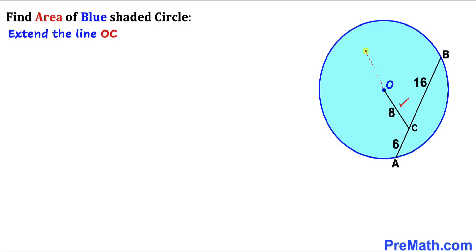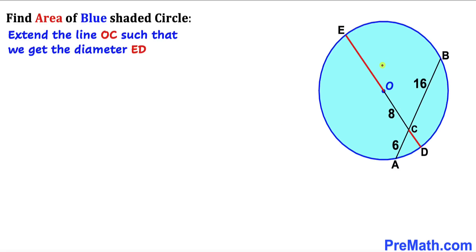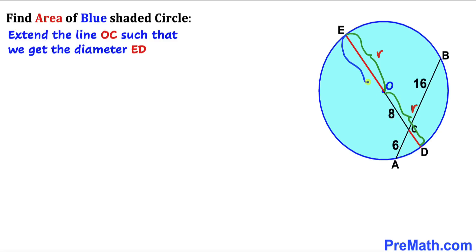I'm going to extend OC in both directions. As you can see in the next diagram, we get the whole diameter ED. We can observe that EO is the radius r, and OD is likewise the radius r. We know segment OC is 8 units, so the whole segment EC is going to be r plus 8.